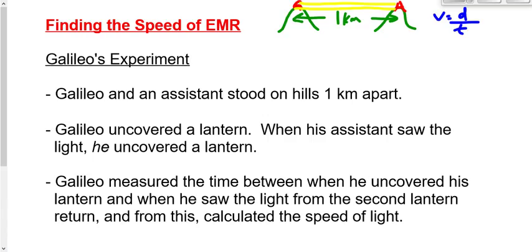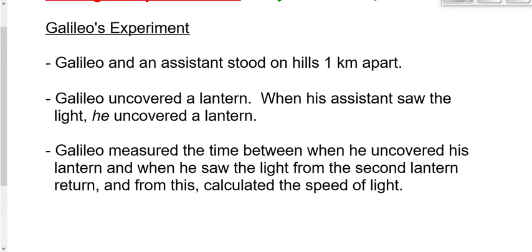And when he measures the time, got the distance, two kilometers, measures the speed. He uses the equation V equals D over T to find the speed. I'm not even going to write a number down for that, though, because it was way off. V equals D over T equals way off. Why does it equal way off? Because of reaction time.